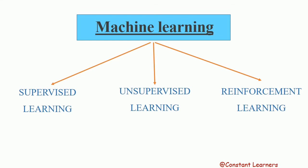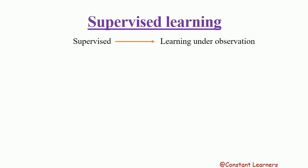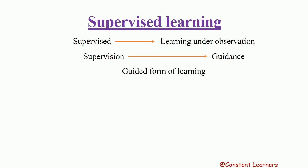Let's discuss supervised learning. Supervised learning means learning under observation. Whenever we say that the machine is learning under observation, it comes under supervised learning. If Jack is learning math under the supervision of Mr. Weasley, that means Jack is learning under the guidance of Mr. Weasley. So supervision relates to guidance, and supervised learning is the one where the machine undergoes a guided form of learning.